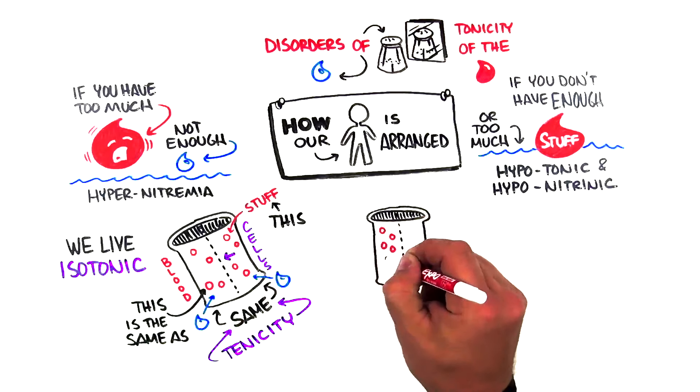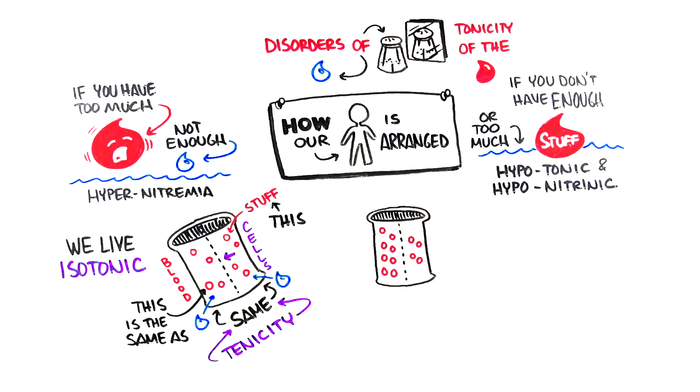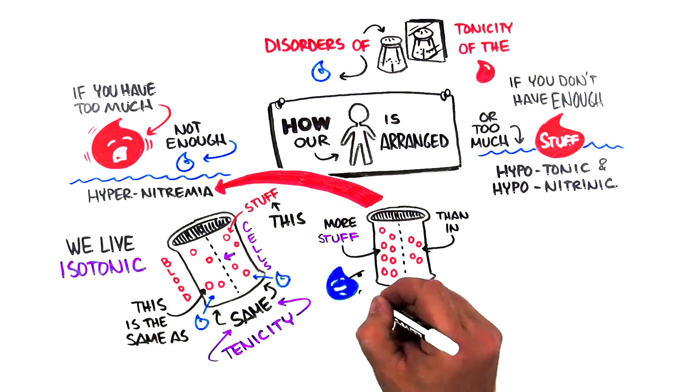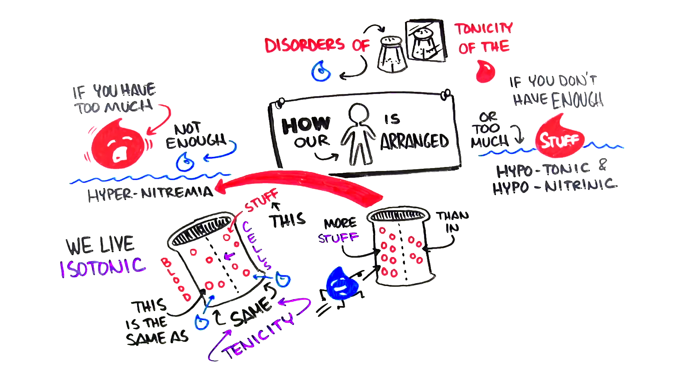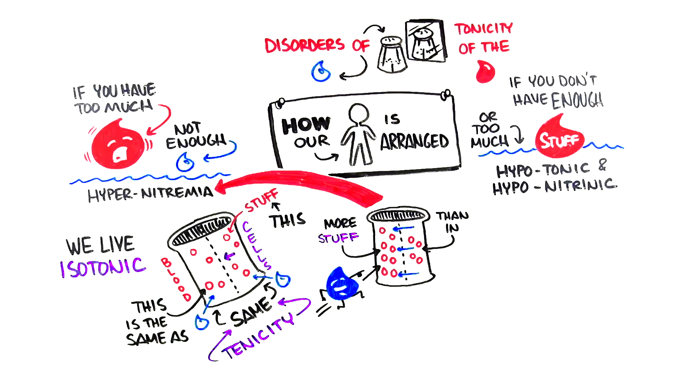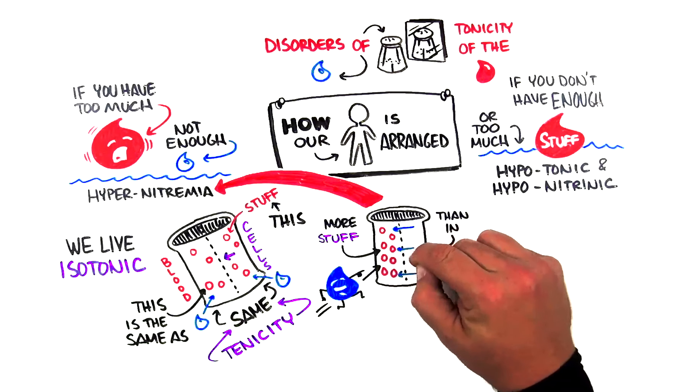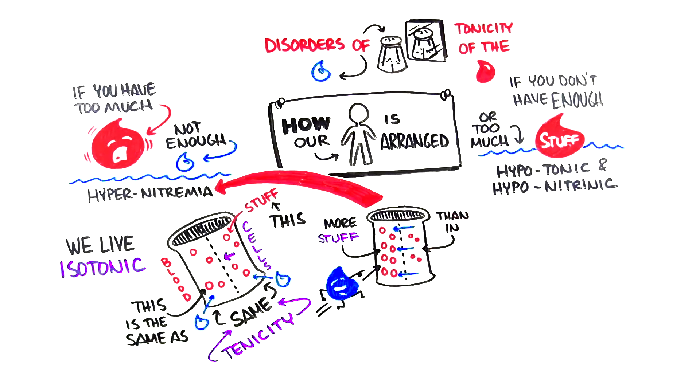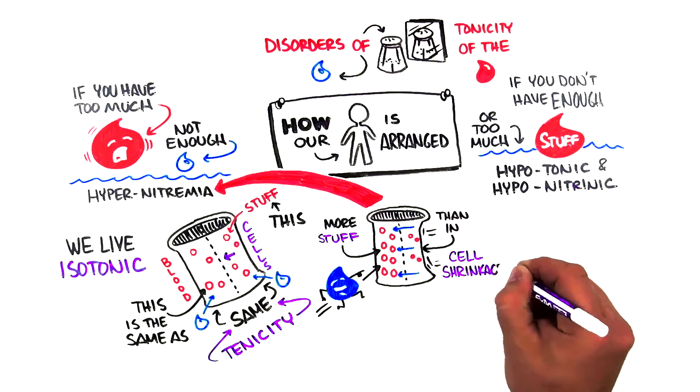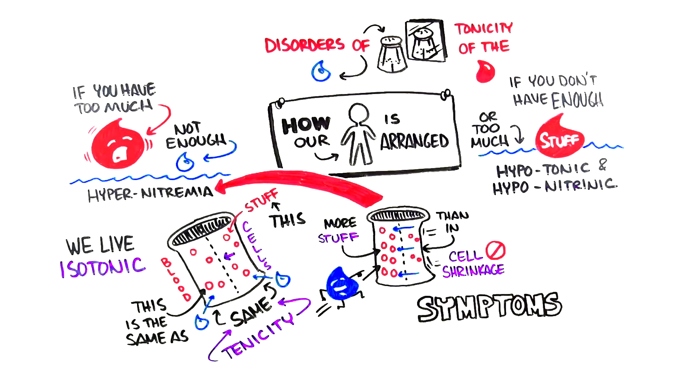Now, if you had too much stuff, hypernatremia, there's more stuff in the blood than there is in the cells. And water is going to go to an area of higher concentration. So water is going to leave the cells across that semipermeable membrane and into the blood. The impact that this has is that the cells are going to shrink. This balances out the water, but cell shrinkage is no good. That's going to provoke some symptoms.